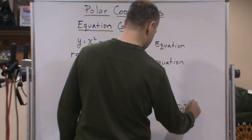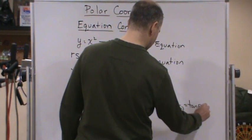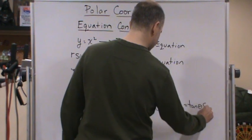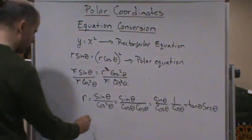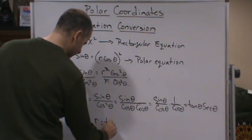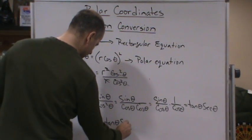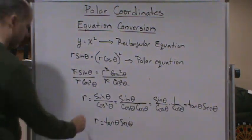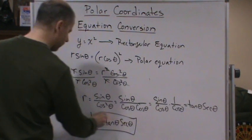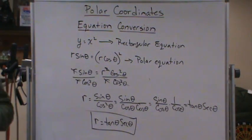So the polar equation is r equals tangent theta secant theta. And that's how we're going to convert from rectangular form to polar form.